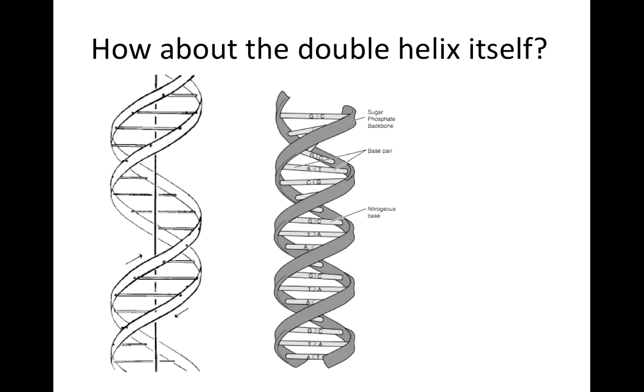Notice that A always pairs with T, and G always pairs with C. Pairings of A's and T's, or G's and C's, are known as base pairs.